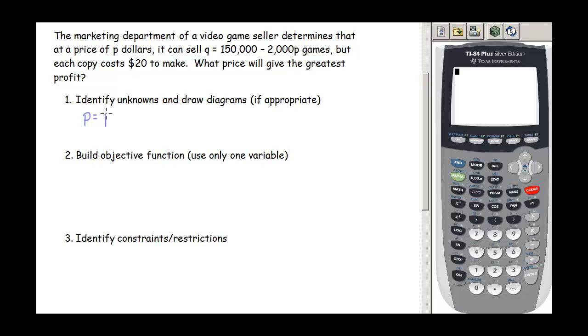So they give us two of our unknowns up here because they give us that demand function. So P is our price and Q is our demand, the number of copies. But we're also talking about profit, so that is another unknown. So let's call that capital F. We could use capital P, that's what we tend to use, but sometimes it can get a little confusing when we've got a lowercase p and a capital P in a problem.